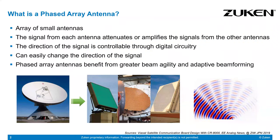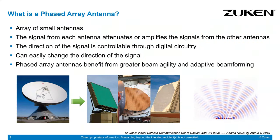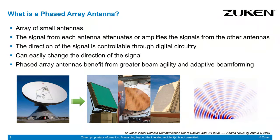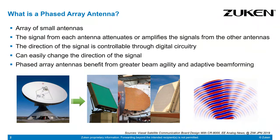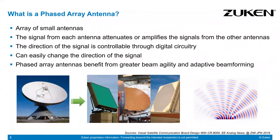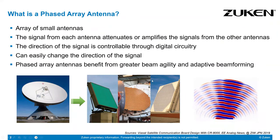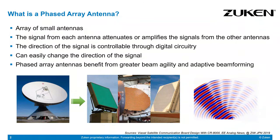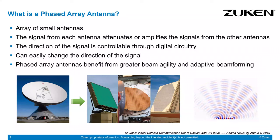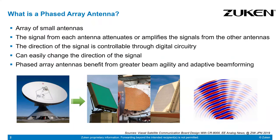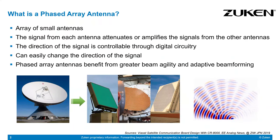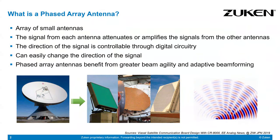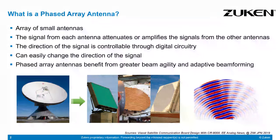Let's talk a little bit about phased array. What is a phased array? It's an array of small antennas, and these antennas allow for attenuation and amplification from other sources. The direction of this signal is controllable through digital circuitry, so you can emphasize in one direction — X, Y, and so on — and based on that, it's easy to change the direction of the signal. It's just a matter of passing a call.